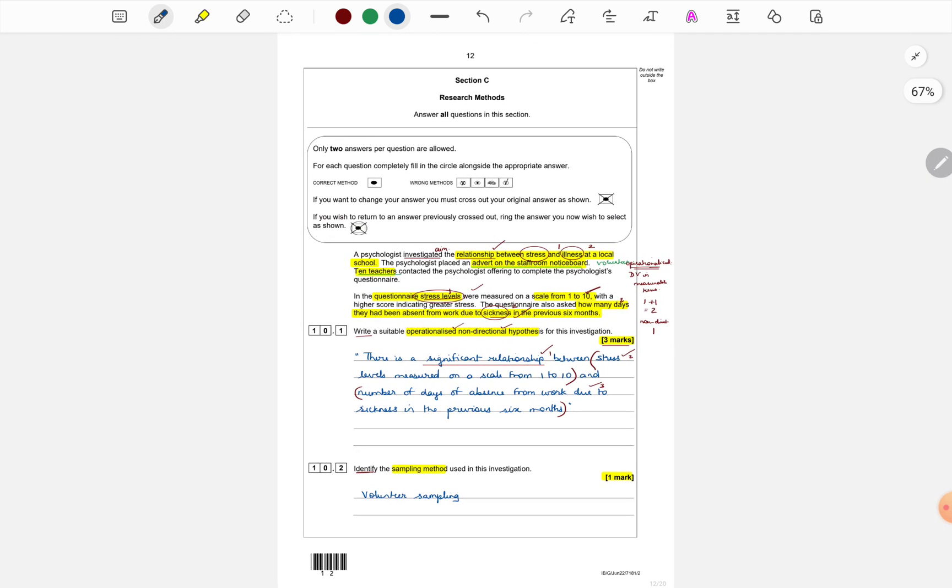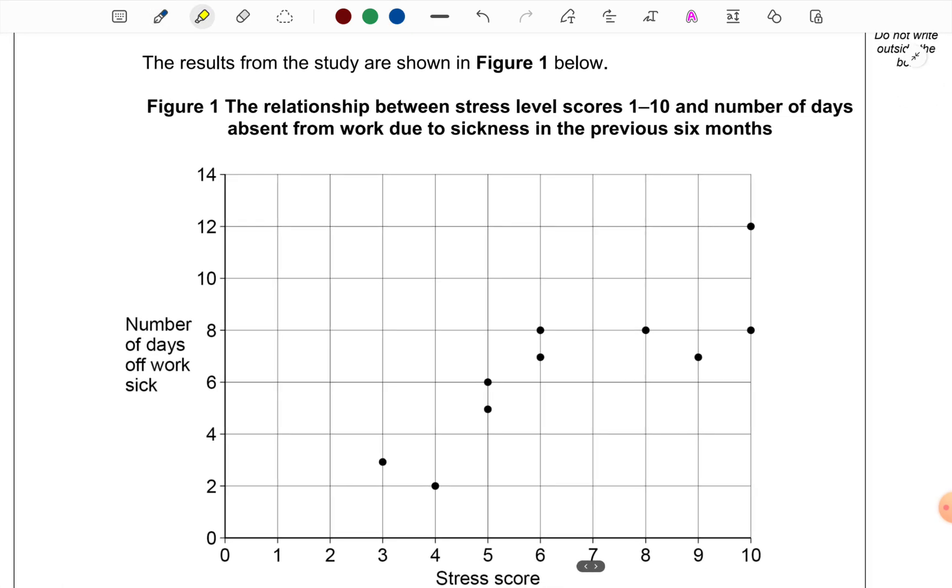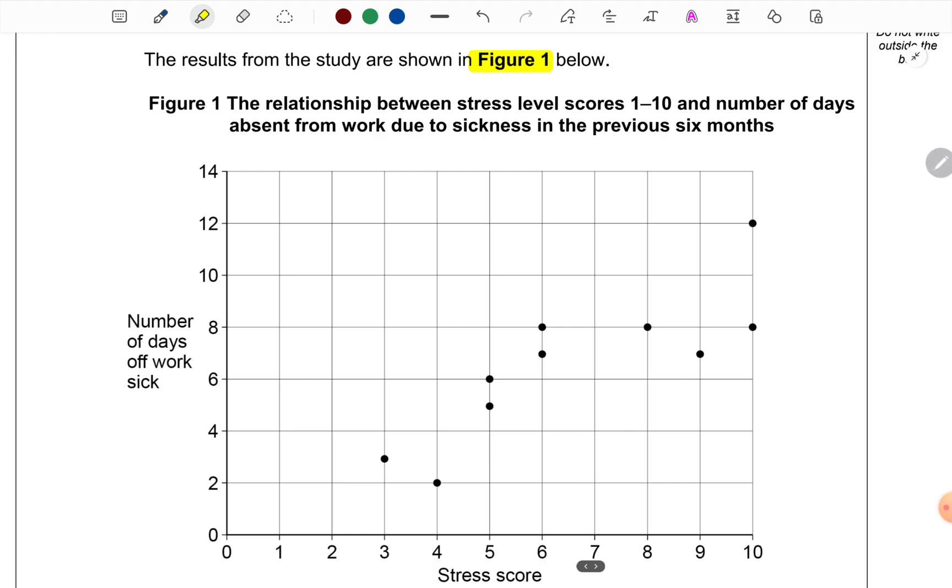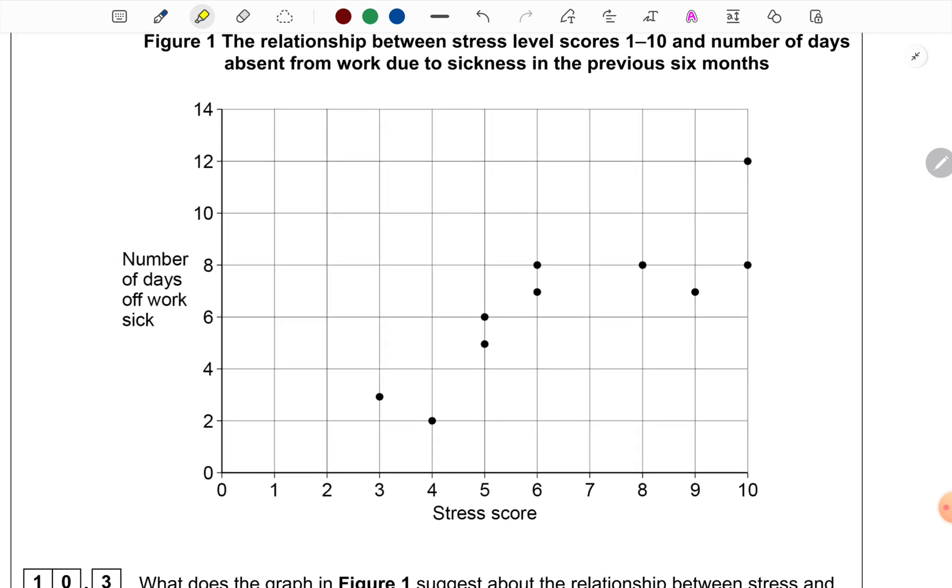Okay, let us come to the next question. The results from the study are shown in figure 1 below. Whenever we have a figure or a table in front of us, first we should read the title. The title says the relationship between stress level scores from 1 to 10 and number of days of absent from work due to sickness in the previous 6 months. Next, we should read the x-axis.